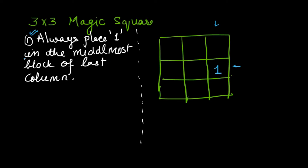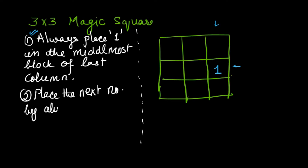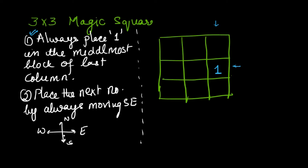What is the second step? Place the next number by always moving southeast. We know the four directions — north, south, east, and west — and southeast is this direction. So the second rule says we always move southeast to fill in the next number. From 1, we move southeast, and the block we reach is outside the magic square — it becomes an imaginary block. We know number 2 has to go in this block, but we can't keep it outside.